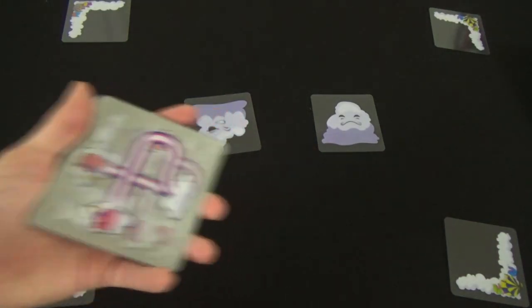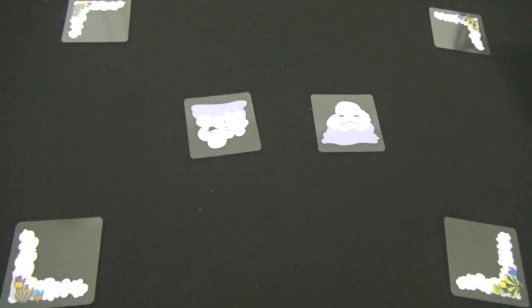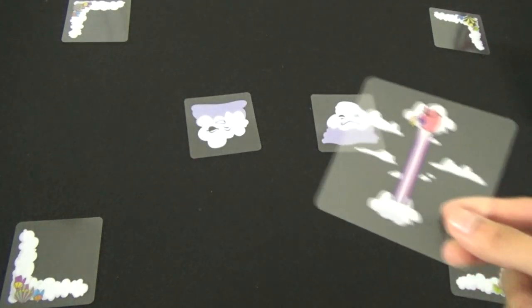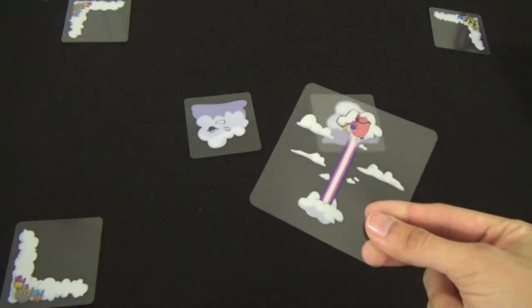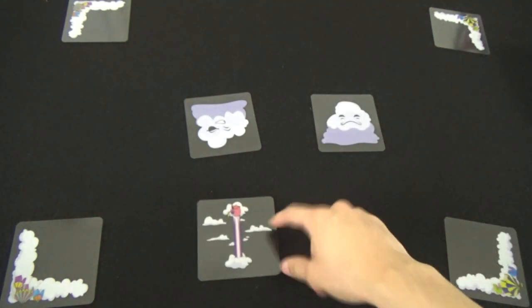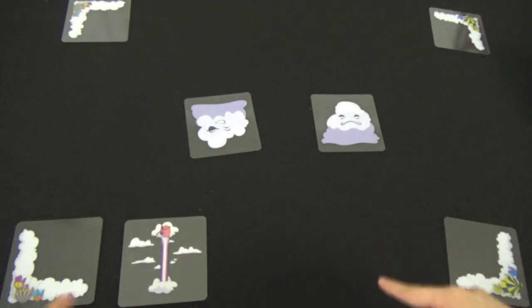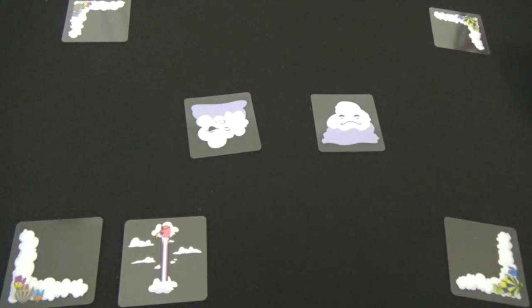Now each player is going to take their deck of cards, shuffle them and then take the top card and place it so that the bottom of that card is aligned along the edge of the board. Anywhere they'd like.